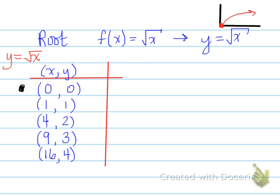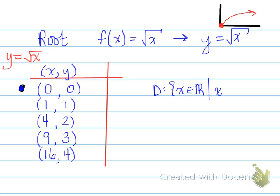Don't forget the hard start. This dot means there's a hard start to the function — it doesn't continue forever; it actually stops at (0, 0). When we stop at (0, 0), the domain means x belongs to real, such that x is greater than or equal to 0. And the range is y belongs to real, such that y is greater than or equal to 0.